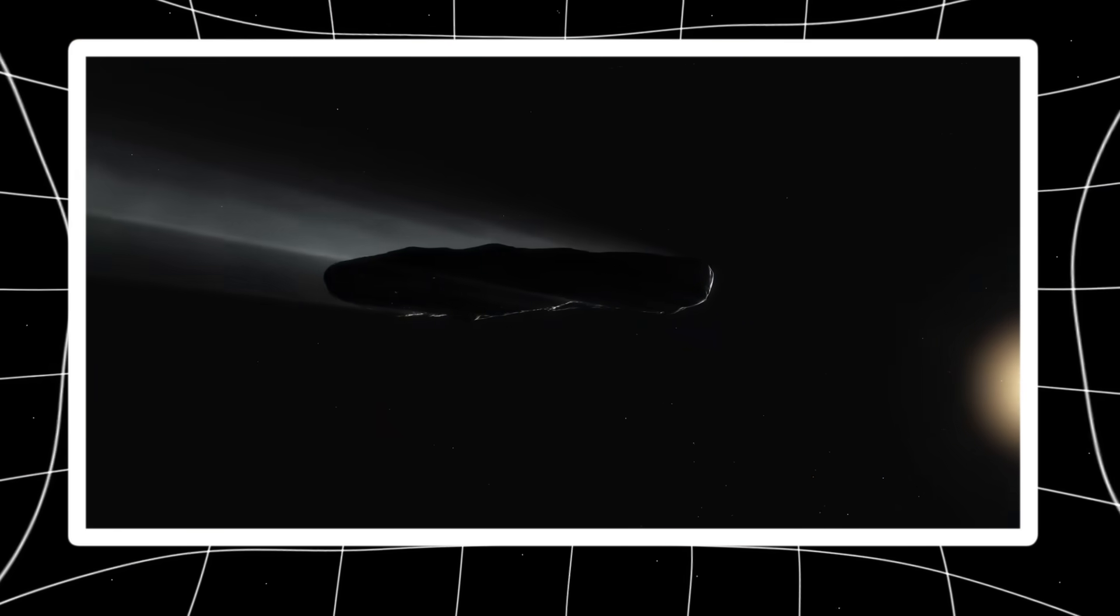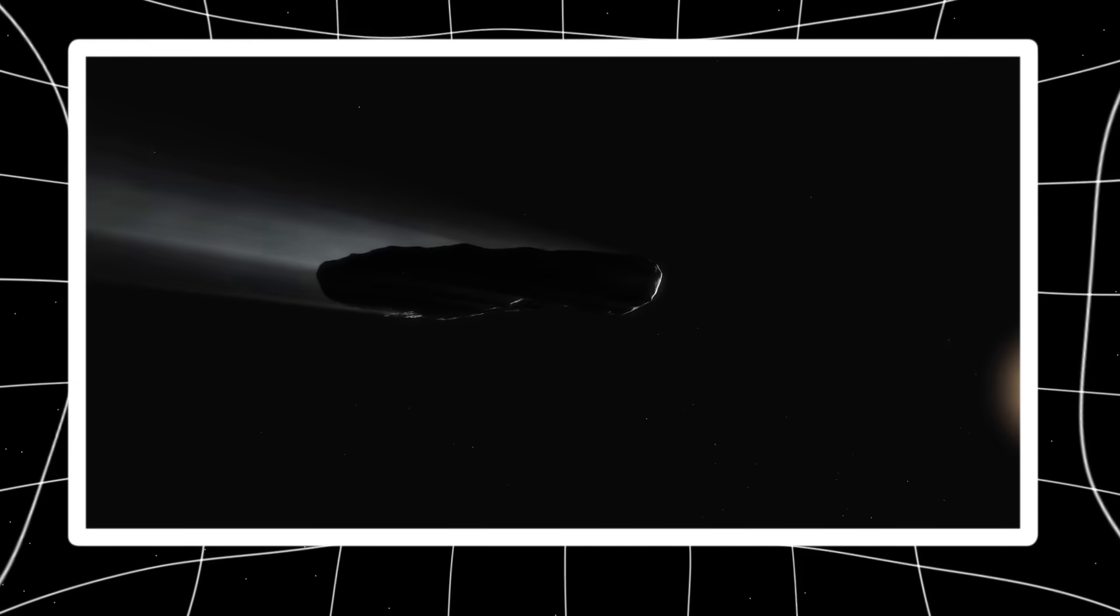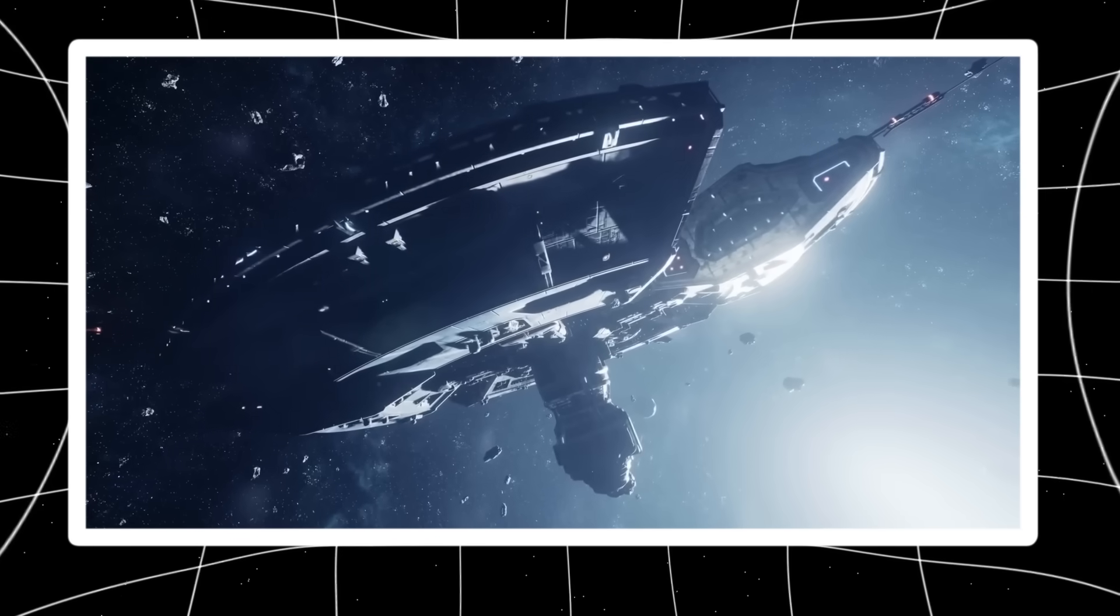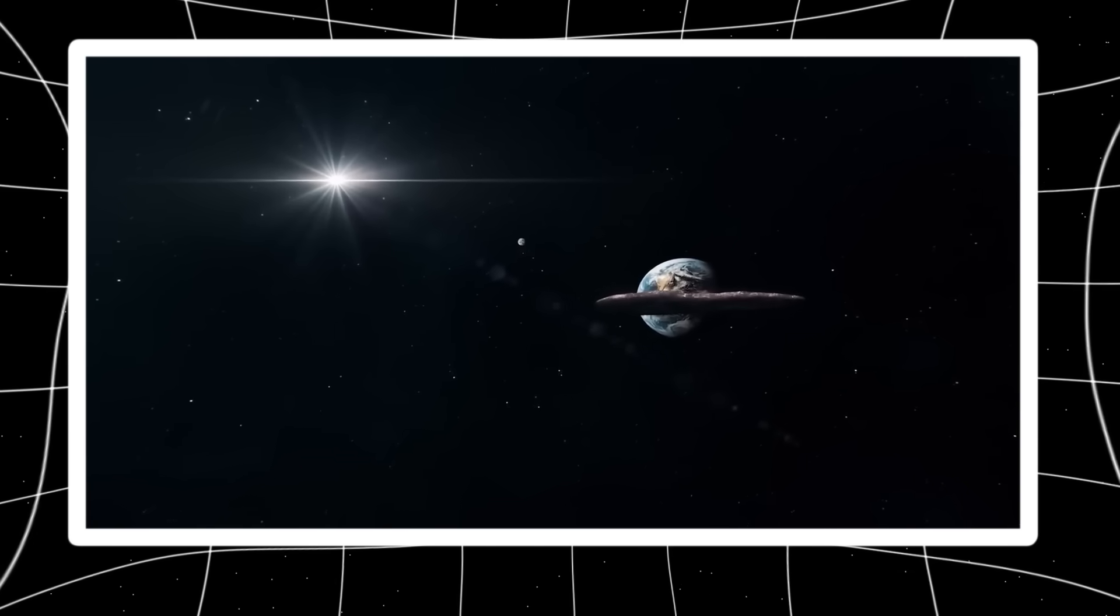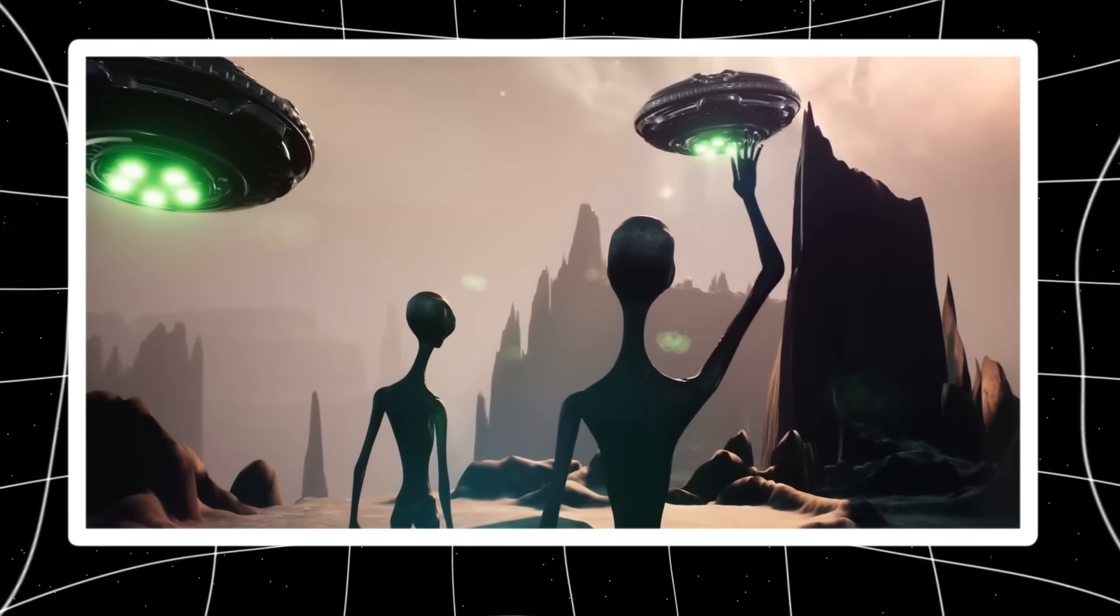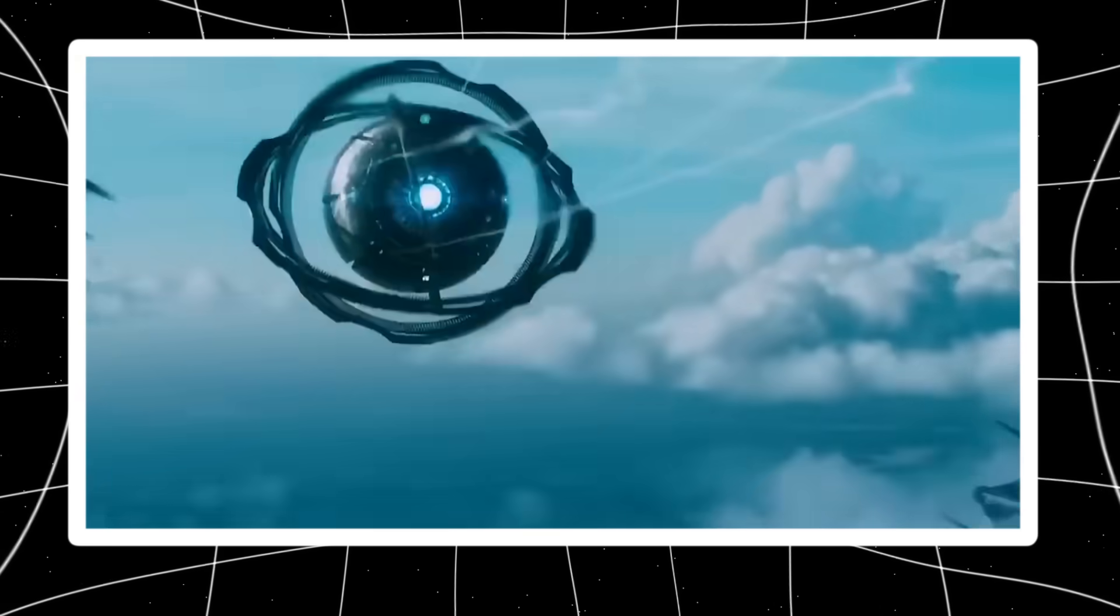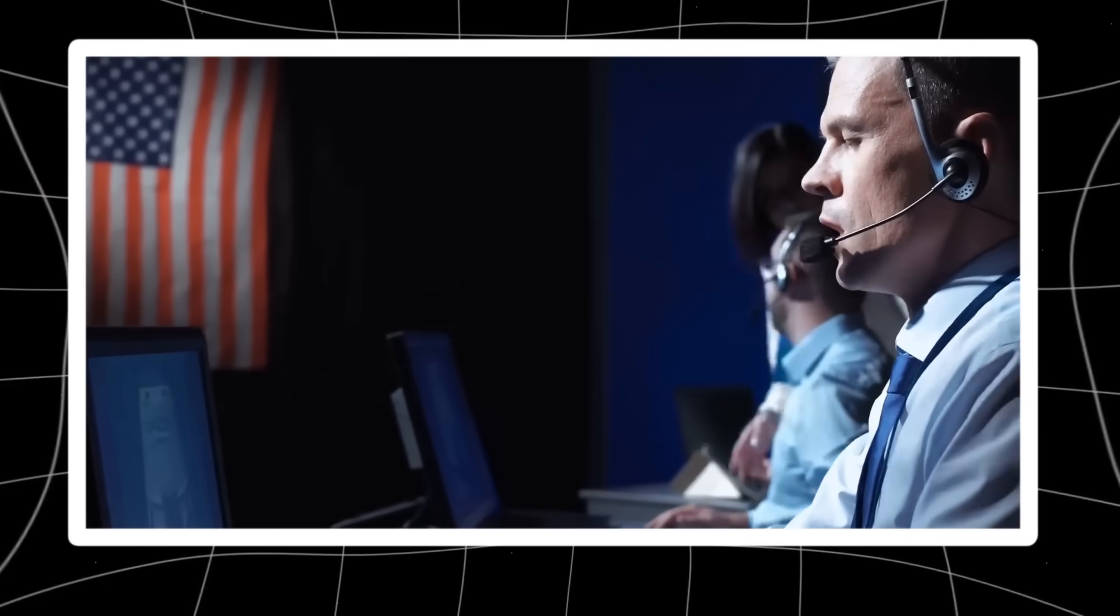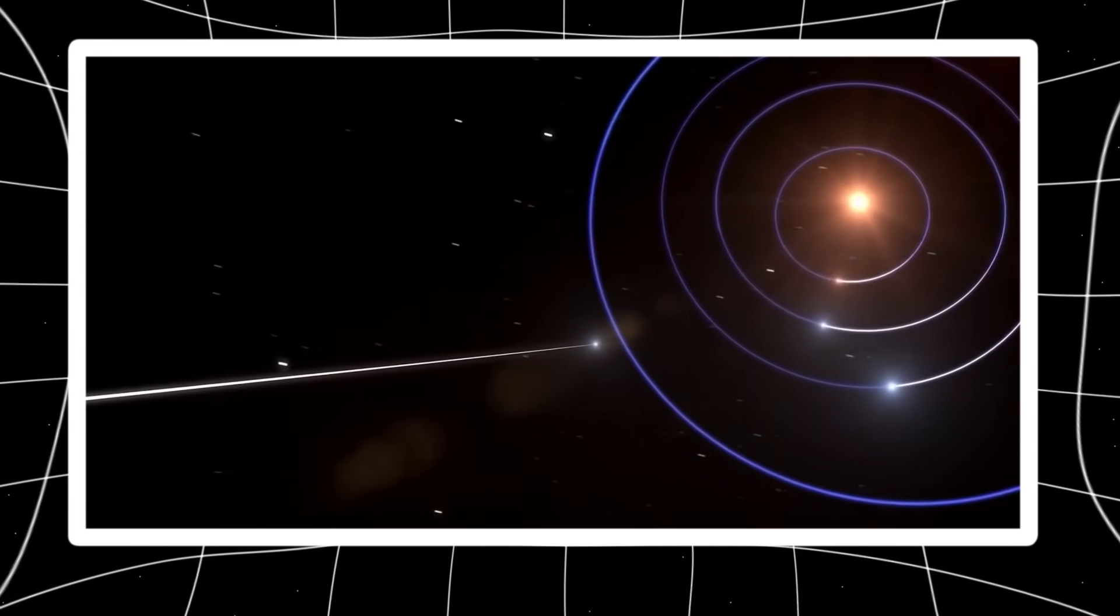When Oumuamua first passed through our solar system in 2017, it already defied classification. It had no comet tail. It didn't behave like an asteroid. Its elongated cigar-like shape spun erratically as it accelerated, yes, accelerated, away from the sun. Scientists offered explanations, from outgassing to solar radiation pressure, but none truly fit the data. And just as quickly as it appeared, it was gone, on a trajectory out of the solar system, never to return.